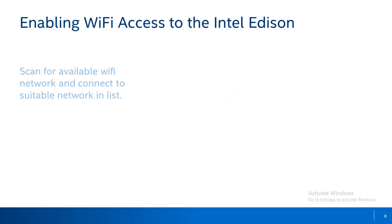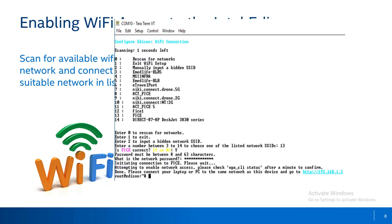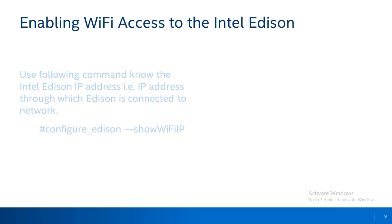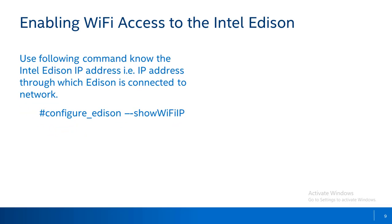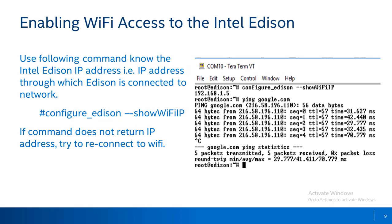All available Wi-Fi networks would be scanned and listed, from which you can select your desired network and connect using the suitable password. To identify the IP address of Intel Edition, use the given command — it will show the IP address with which your board is connected to the Internet. To validate the established connection, you can also ping any existing live server, for example Google.com, and it should respond back.